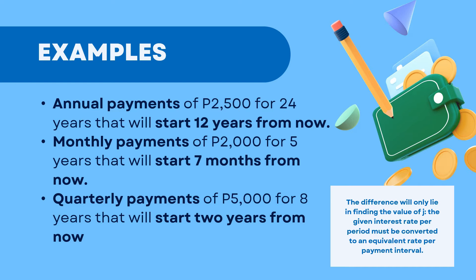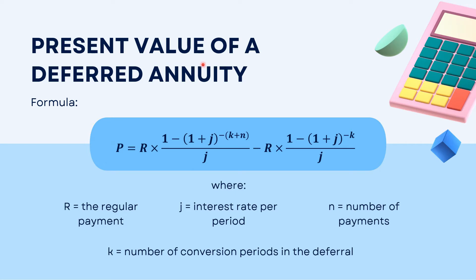Make sure you master how to find the period of deferral because we'll need it when solving deferred annuity problems. For the present value of a deferred annuity, here is our formula. It's a bit longer compared to previous formulas. R is still the regular payment, J is still the interest rate per period, N is still the number of payments. The new variable here is K, which represents the number of conversion periods in deferral, or our period of deferral. Let's have some example problems representing deferred annuity.